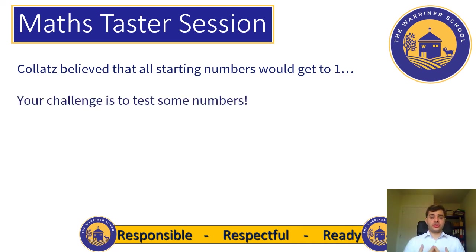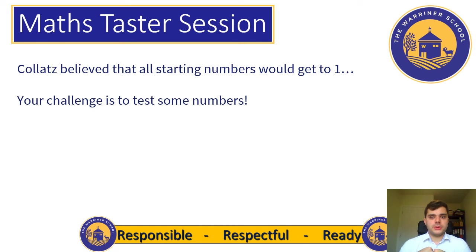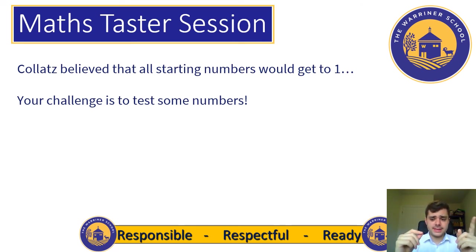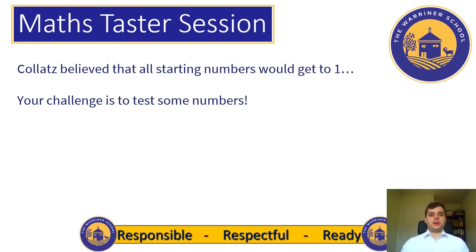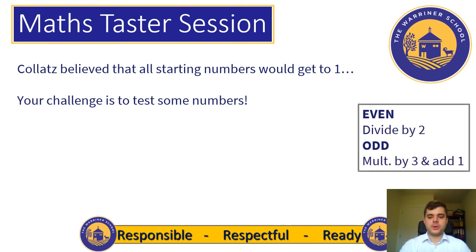Your challenge is to test some numbers. You've probably got about 20 minutes left, and I would suggest starting with the numbers between 1 and 10 — get all of those done. 1 would be very easy because you're already at 1, and some of them are quite hard. There'll be different lengths of caterpillars, so think about that as you go. Remember the rules: if you have an even number you divide it by 2, and if you have an odd number you multiply by 3 and then add 1.